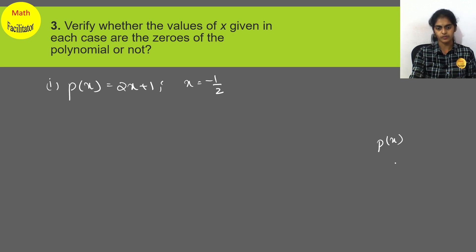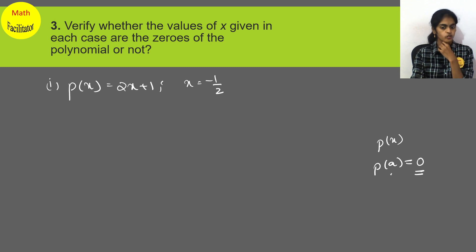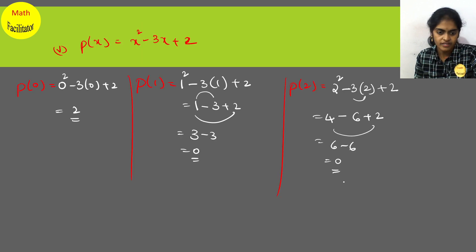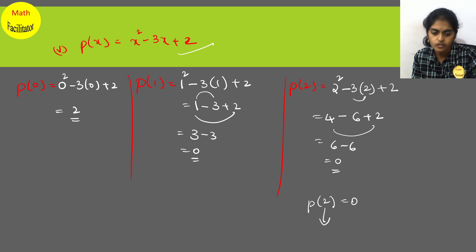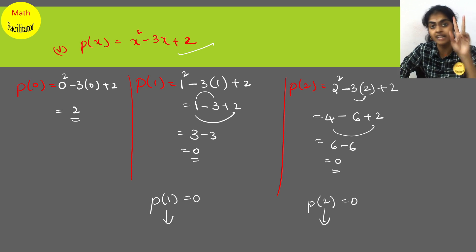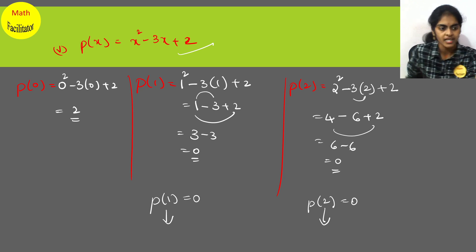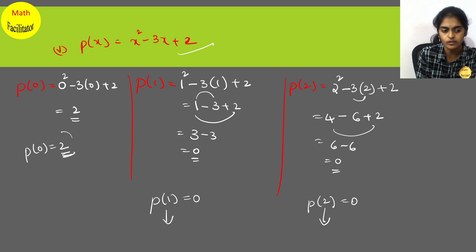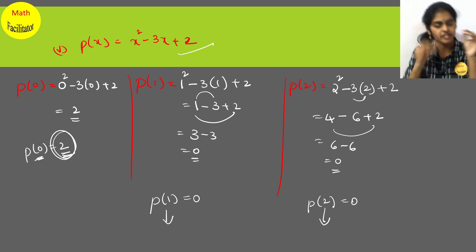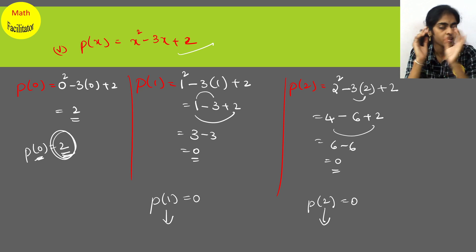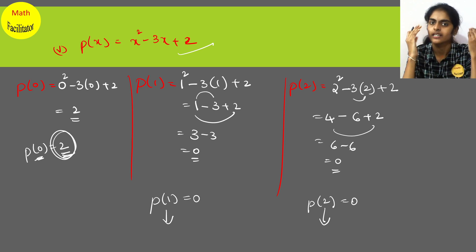If p(x) is a polynomial and I substitute some value p(a) and get the final answer as 0, then that a is called a zero of the polynomial. For example, if p(2) = 0, then 2 is a zero; if p(1) = 0, then 1 is a zero. Since that polynomial is quadratic, it has two zeros: 1 and 2. But if p(0) gives a non-zero value, then 0 is not a zero of the polynomial.